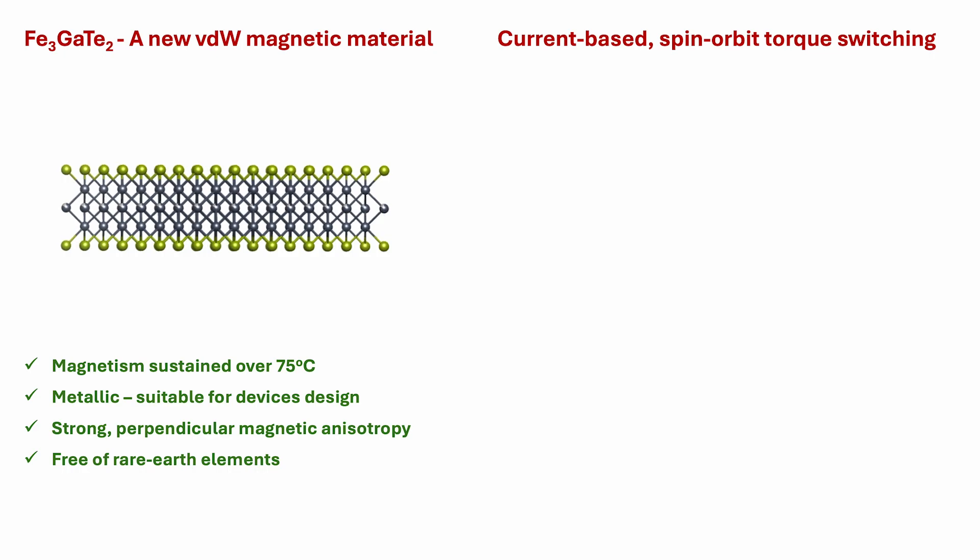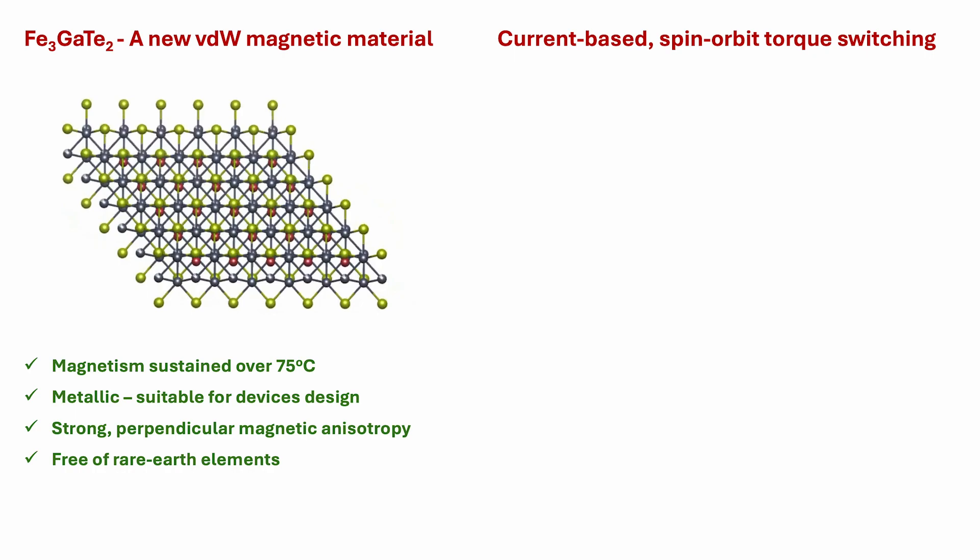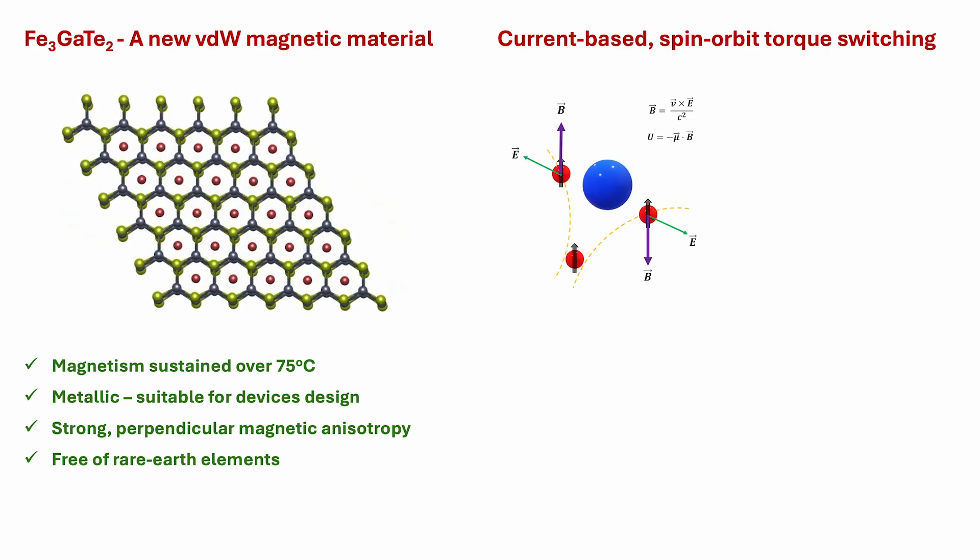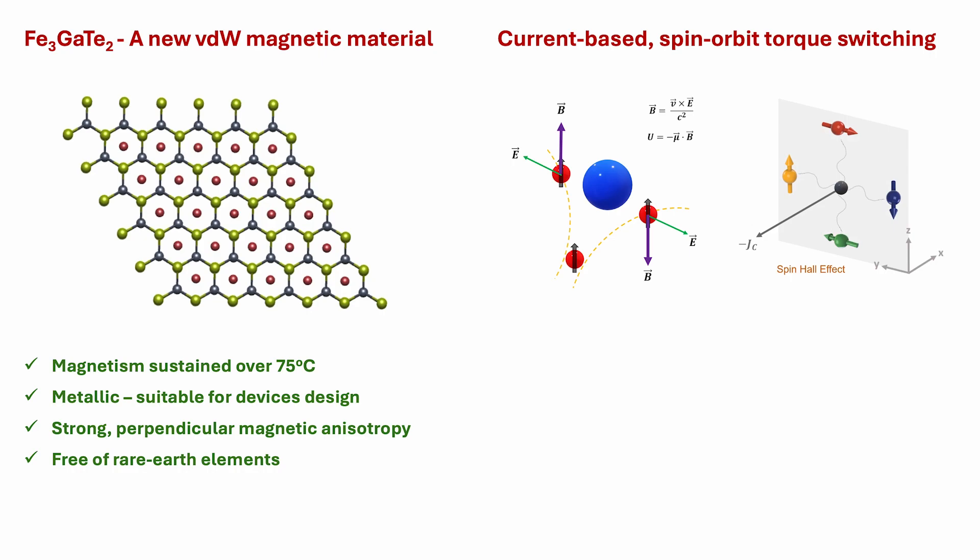To enable electrical control of magnetism, we have used the principle of current-based spin-orbit torque switching. It leverages the fact that in certain materials like platinum that have a high spin-orbit coupling, electrons scatter based on their spin state. This results in a phenomenon called the spin-hall effect, which allows converting a flow of electric charge current into an orthogonal spin current.